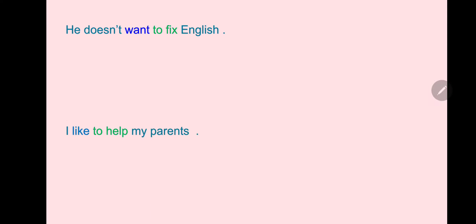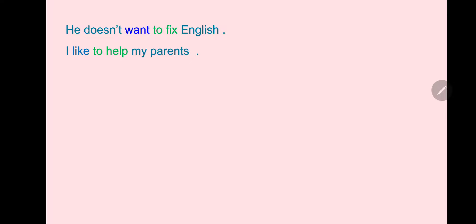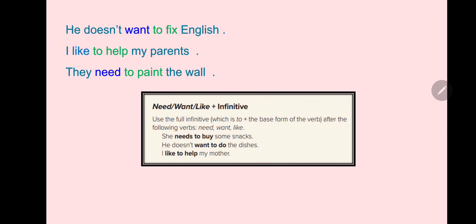He doesn't want to fix — after 'want', we use 'to' followed by the base verb. I like to help my parents. They need to paint a wall. With want, need, and like, always use 'to' followed by the bare infinitive.